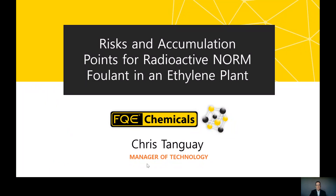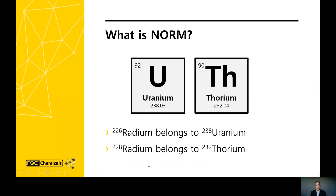First, let's define what NORM is. NORM is naturally occurring radioactive material. Radioactive uranium and thorium are found in the earth's rock formations. During oil and gas production and extraction, it is not the long-lived uranium and thorium isotopes that are mobilized. However, different isotopes of radium-226, radium-228, and lead-210 are mobilized and become transient.